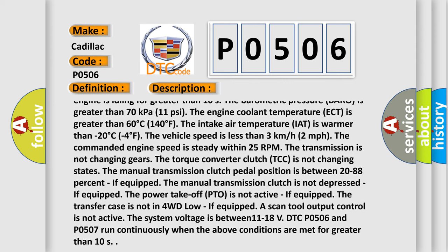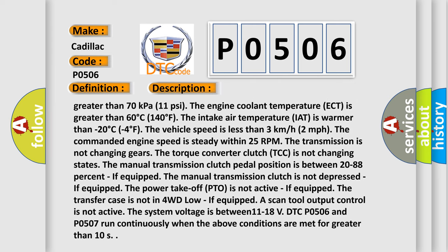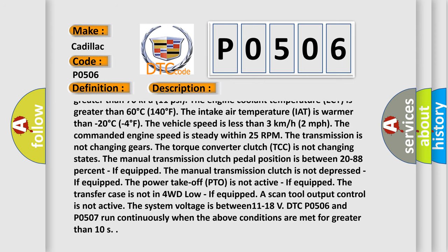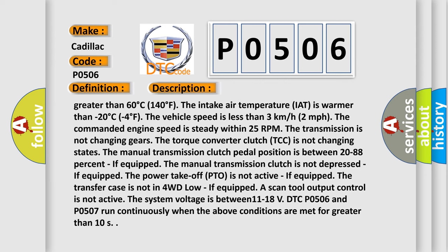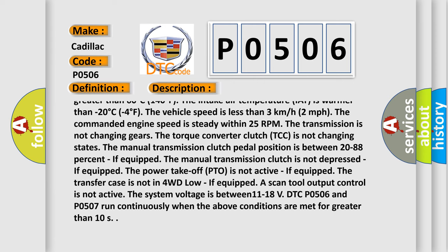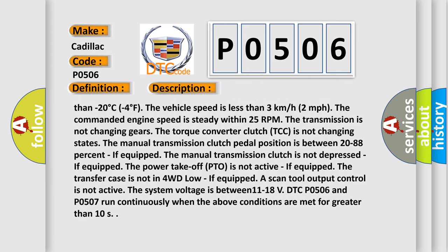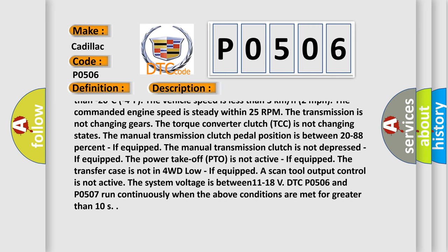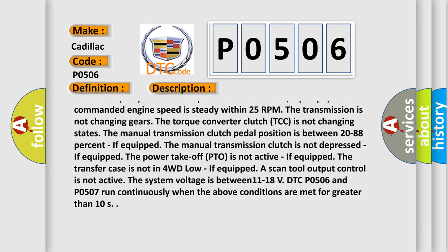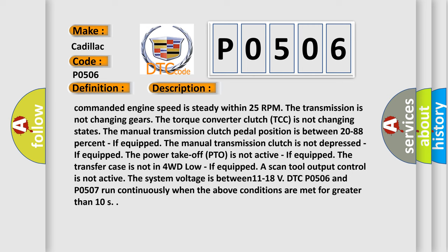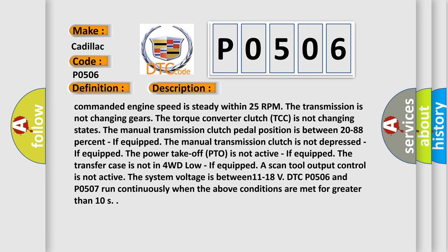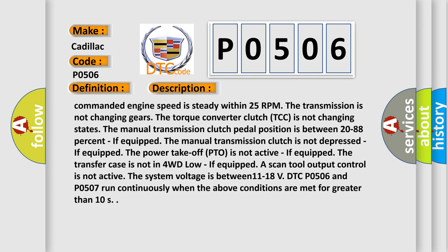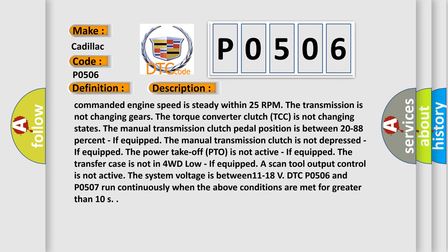Additional enabling conditions: the engine is operating for at least 60 seconds; the engine is idling for greater than 10 seconds; barometric pressure is greater than 70 kilopascals (11 psi); engine coolant temperature ECT is greater than 60°C (140°F); intake air temperature IAT is warmer than minus 20°C (minus 4°F); vehicle speed is less than 3 km/h (2 mph); commanded engine speed is steady within 25 RPM; the transmission is not changing gears; the torque converter clutch TCC is not changing states; manual transmission clutch pedal position is between 20 to 88 percent if equipped; the clutch is not depressed if equipped; power takeoff PTO is not active if equipped; the transfer case is not in 4WD low if equipped; no scan tool output control is active; system voltage is between 11 to 18 volts. DTC P0506 and P0507 run continuously when the above conditions are met for greater than 10 seconds.